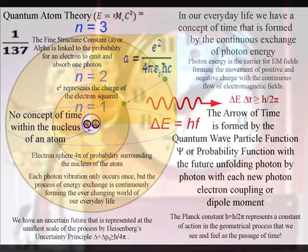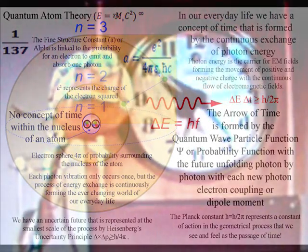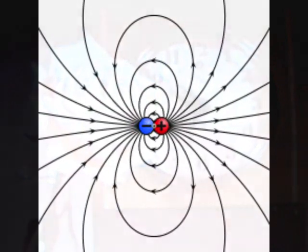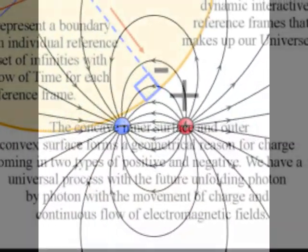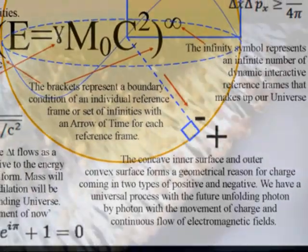In this theory, the surface area of the sphere represents a dynamic two-dimensional boundary condition with the information encoded by the movement of positive and negative charge. The inner concave surface represents negative charge, and the outer convex surface represents positive charge.